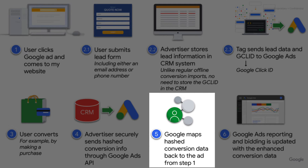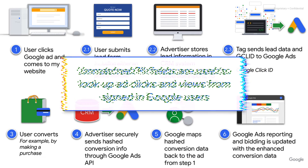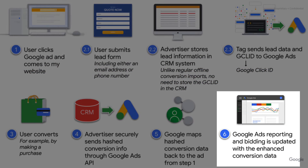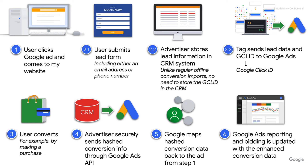Google Ads can then map Mark's hashed information back to the ad that drove the lead. Note that any unmatched PII fields are further used to look up ad clicks and views from Google signed-in users to improve conversion attribution, which should increase the number of reported conversions overall. Finally, Google Ads reporting and bidding is updated with the enhanced conversion data. In summary, using Enhanced Conversions for Leads allowed me to import my users' offline conversion events directly into Google Ads for reporting and optimization, without having to store the GCLID in my CRM.